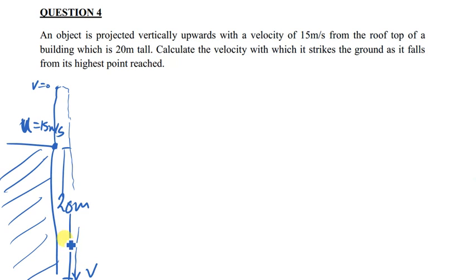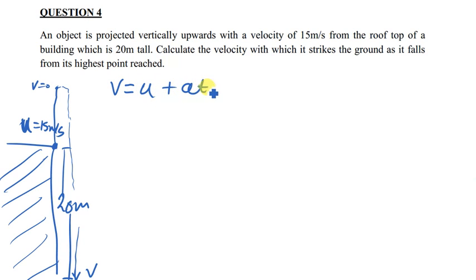We first have to find the time it will take, because the final velocity is given by initial velocity plus acceleration times time — v = u + at. In this case we are using acceleration due to gravity. We can use 10 or 9.81, depending on what you've been taught to use at your university.